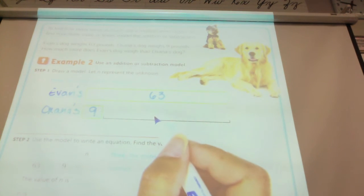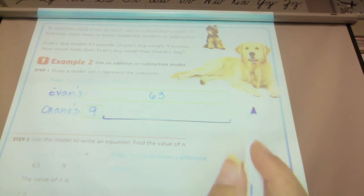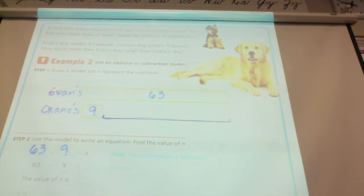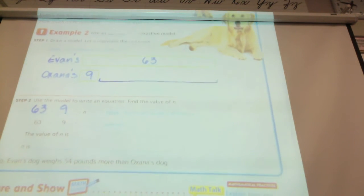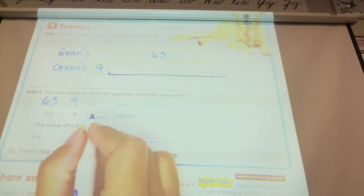Alright, so, we need to decide how much more. What is this spot that we don't have filled in? What number is that? Are we going to divide or subtract? Subtract. Subtract. We need to subtract. So, we're going to take 63 minus 9. We're going to take the weight of Evan's dog minus the weight of Oksana's dog. And what is 63 minus 9?